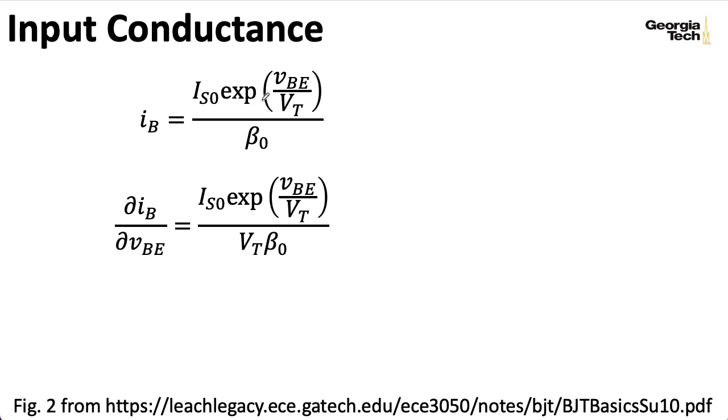So taking the derivative of the base current with respect to the base emitter voltage gives me this expression here. The only thing that happens when I take the derivative of the exponent is, once again, the VT pulls out in front. But I can now use the same trick I've already used a couple of times and recognize that this factor here, well, that's just the base current. So this is just IB divided by VT. Once again, I'm interested in computing the slope at a particular operating point. So I'll plug in capital IB. That's our DC bias current associated with the base. And we'll call this G pi.